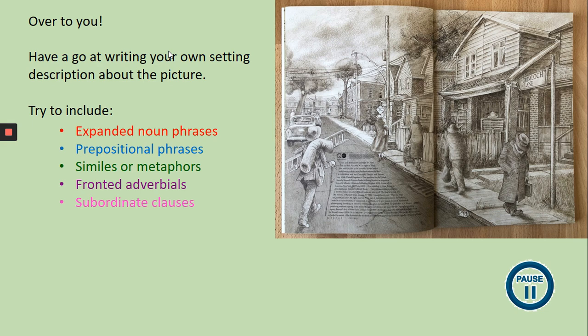Now it's over to you. I would like you to have a go at writing your own setting description about the picture. You might want to go back to the bigger picture on the slides so you can see all those details again. Remember, we've just done all that work where you've gathered all that vocabulary to help you write. Have a go trying to use some expanded noun phrases, prepositional phrases, similes, metaphors if you really want to push yourself, fronted adverbials, and a subordinate clause.